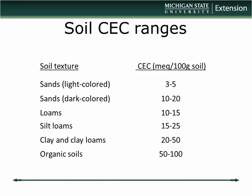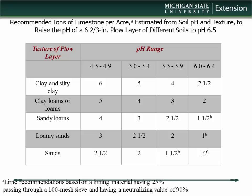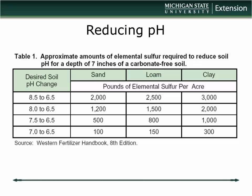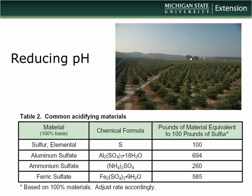If you're in a situation where you need to adjust pH, reference values are in your handouts. Basically, the more of a shift you need to make, the more material you need to add, and finer texture soils require more material to raise or lower pH. You can use elemental sulfur or ammonium sulfate to lower pH — there are ratios showing how much ammonium sulfate you'd need to get the same acidifying effect as elemental sulfur.